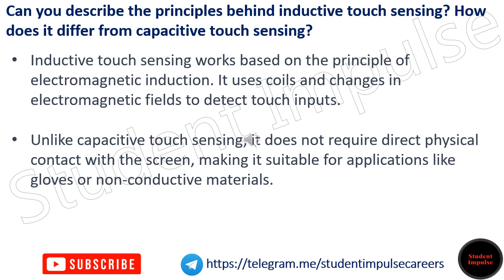Can you describe the principles behind inductive touch sensing? How does it differ from capacitive touch sensing? Inductive touch sensing works based on the principle of electromagnetic induction. It uses coils and changes in electromagnetic fields to detect touch inputs. Unlike capacitive touch sensing, it does not require direct physical contact with the screen, making it suitable for applications like gloves or non-conductive materials.